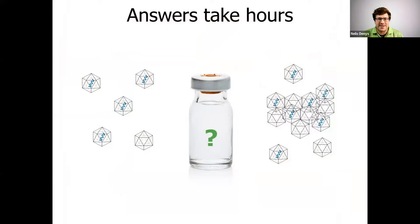Finding out what you have with classic techniques like qPCR or ddPCR, ELISA, AUC, or even HPLC takes way too much sample and way too much time. So if you need to know right away what you have — what titer you have, how many capsids you have full or empty, or just to know if your sample is aggregated — you could be out of luck with those slow techniques.